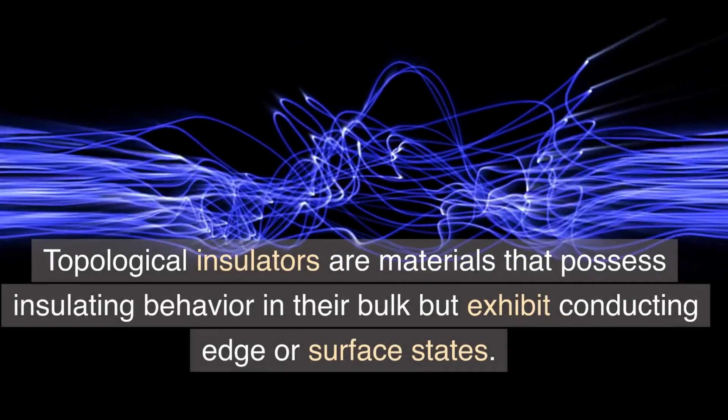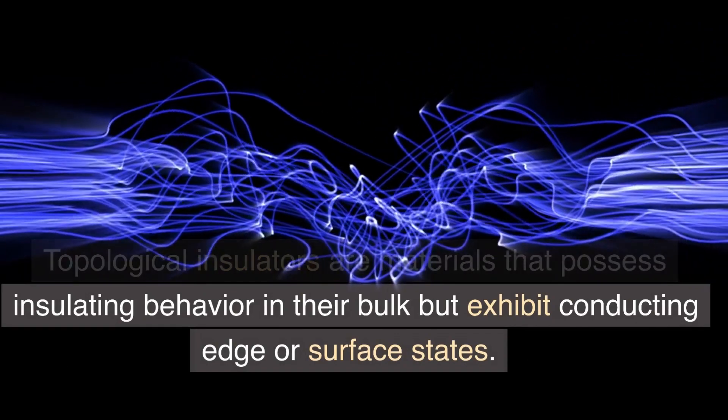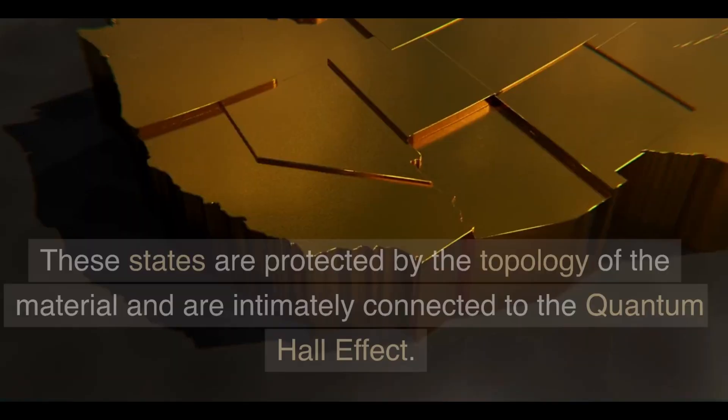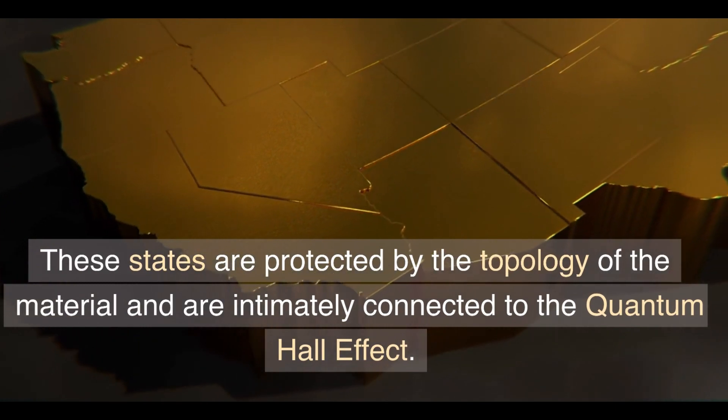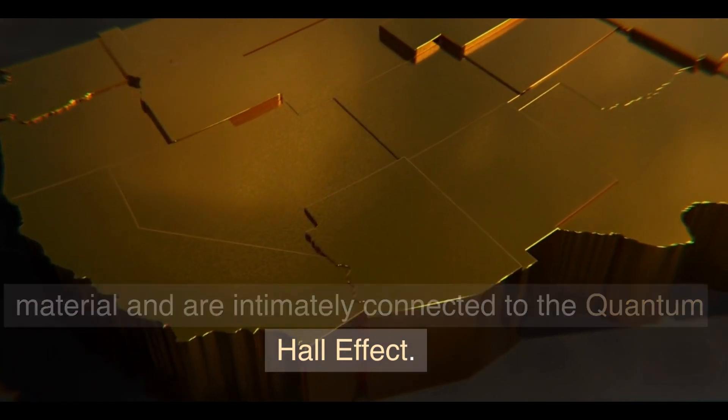Topological insulators are materials that possess insulating behavior in their bulk, but exhibit conducting edge or surface states. These states are protected by the topology of the material and are intimately connected to the quantum Hall effect.